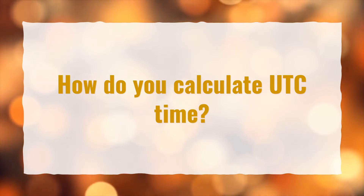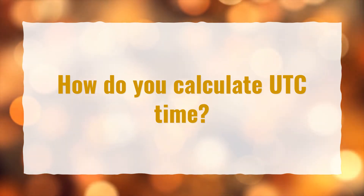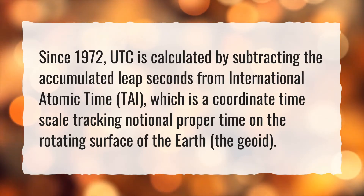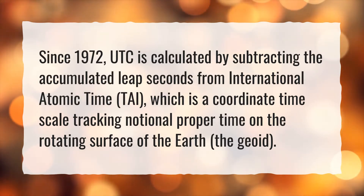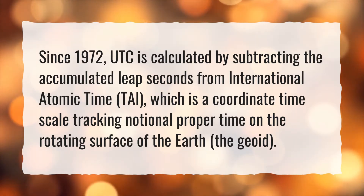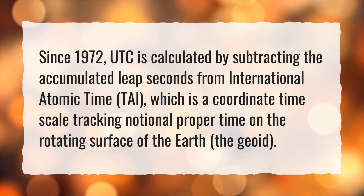How do you calculate UTC time? Since 1972, UTC is calculated by subtracting the accumulated leap seconds from International Atomic Time, which is a coordinate timescale tracking notional proper time on the rotating surface of the Earth, the geoid.